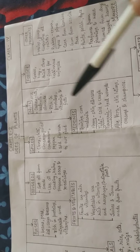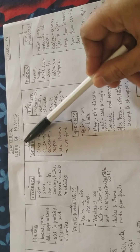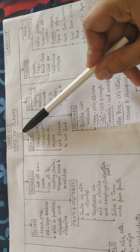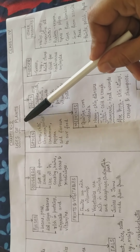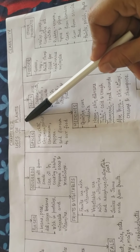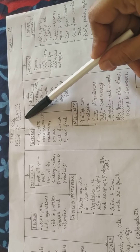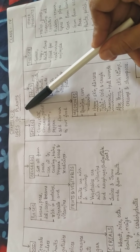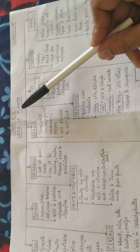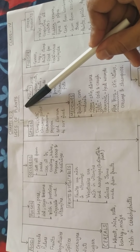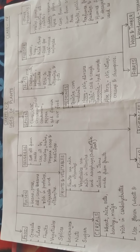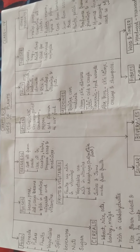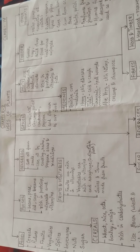So this is chapter number 2 of science — uses of plants — how plants are useful to us and why they are important for us. As we all know, plants give us many useful things, so they are very important in our everyday life.